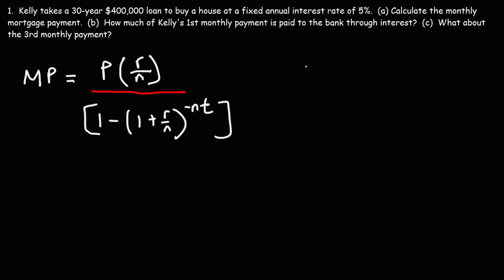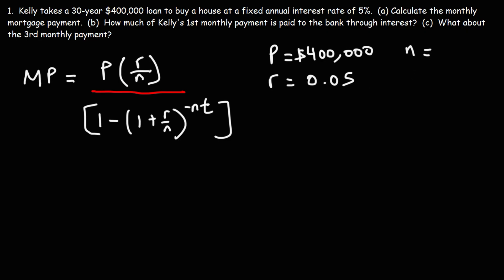Let's write down what we know. The principal balance of the loan is $400,000. The annual interest rate R is 5%, but we need to convert that to a decimal, so dividing 5 by 100 gives us 0.05. We already said N is 12. T is the number of years — this is a 30-year loan, so it's going to take 30 years to pay it off.